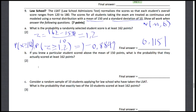Now they ask: if you knew a particular student scored above the mean of 150, what's the probability that they actually scored 162? So we want the probability that X is more than or equal to 162 given that X is more than or equal to 150. Being given that X is more than or equal to 150 basically shrinks our universe.